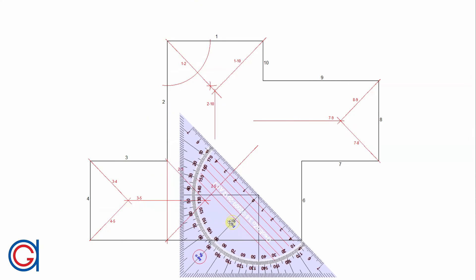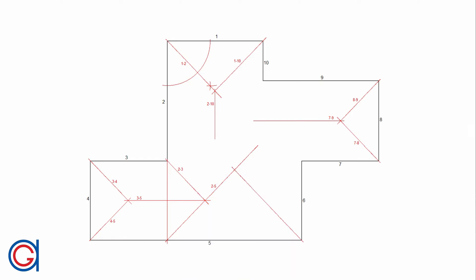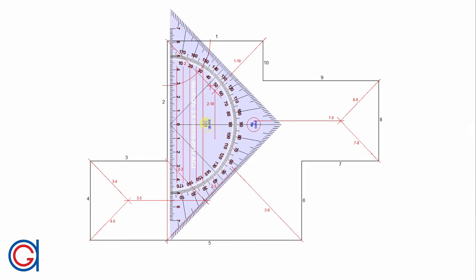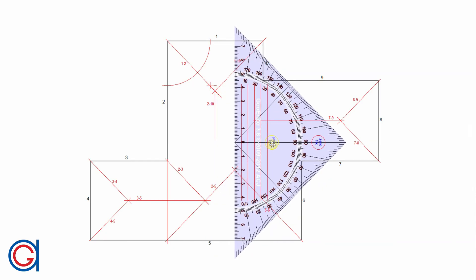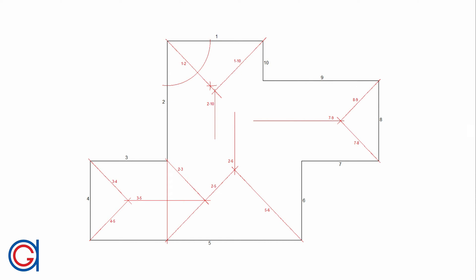We continue with the next angular bisector, that of edges 5 and 6, which intersects with 2-5 at a point highlighted here in red. We do as usual: eliminate the repeated number — we eliminate number 5 and keep numbers 2 and 6, which are parallel. So the new ridge line will also be parallel. We draw the next ridge line and number this line 2-6.